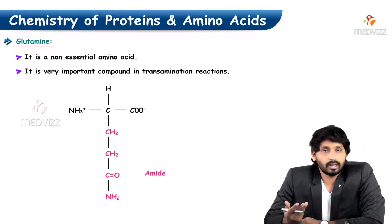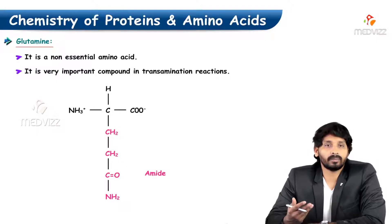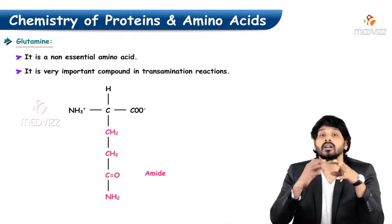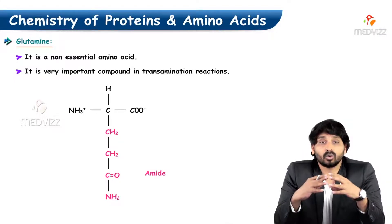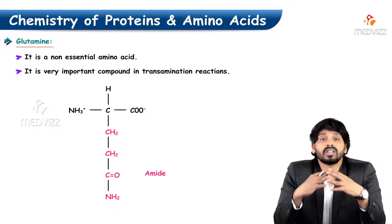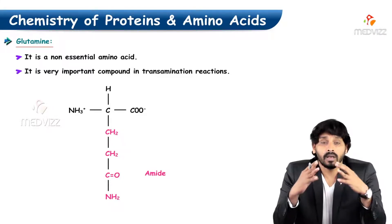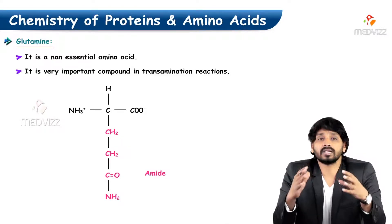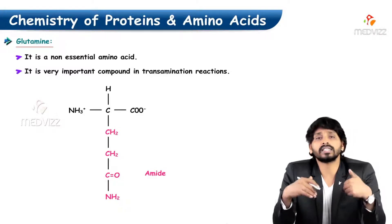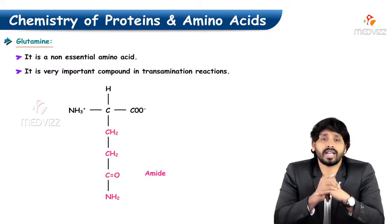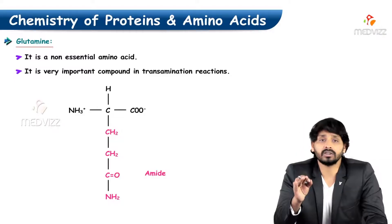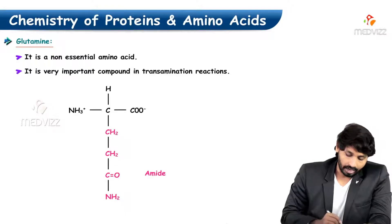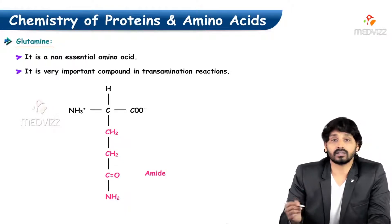Glutamine is also a non-essential amino acid and is a very important compound in transamination reactions. Transamination reactions are the reactions through which we can synthesize non-essential amino acids — they are the basis behind the synthesis of amino acids. Our body cells can produce those amino acids by transamination reactions, and glutamine acts as a mediator in those reactions.